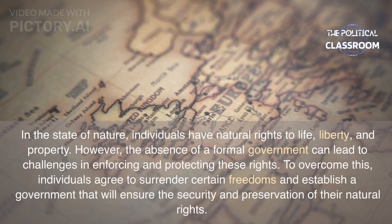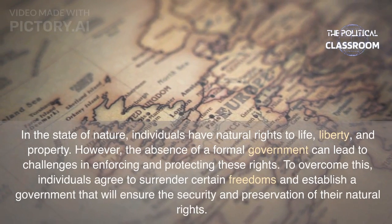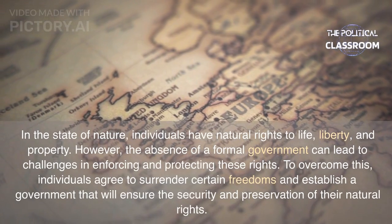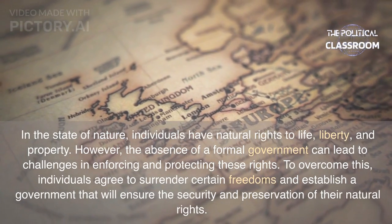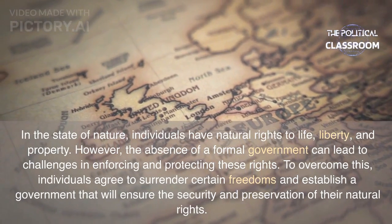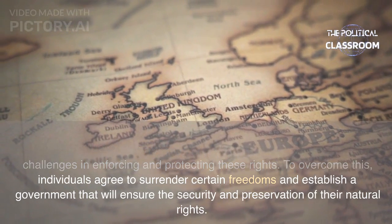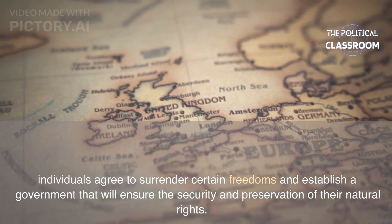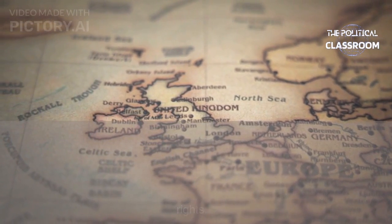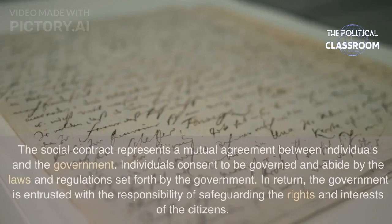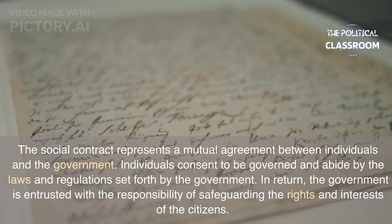In the state of nature, individuals have natural rights to life, liberty, and property. However, the absence of a formal government can lead to challenges in enforcing and protecting these rights. To overcome this, individuals agree to surrender certain freedoms and establish a government that will ensure the security and preservation of natural rights. The social contract represents a mutual agreement between individuals and the government.